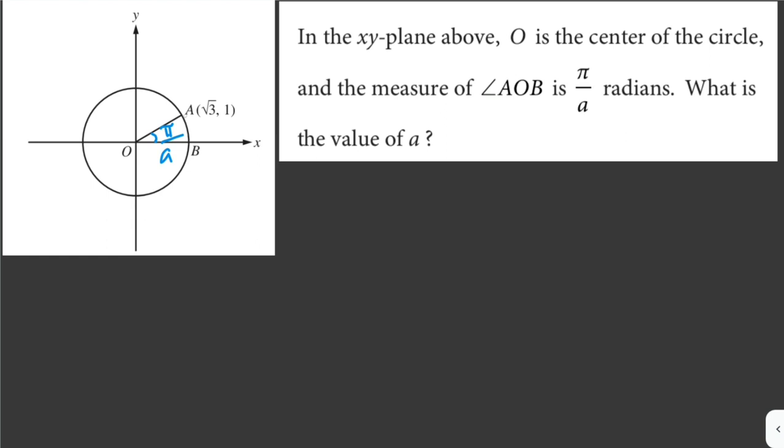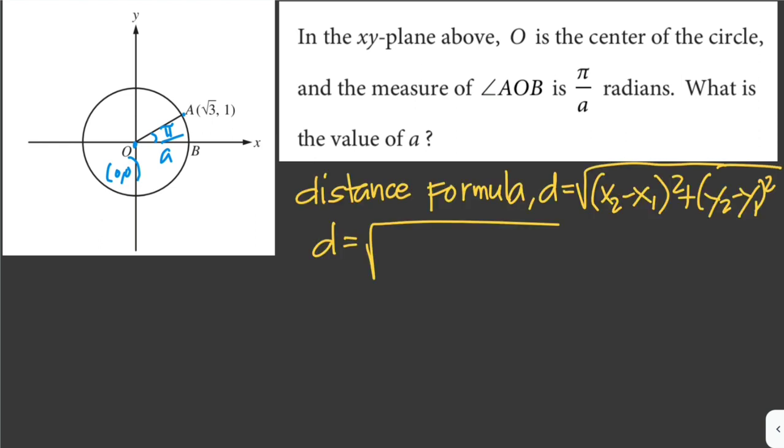We're given here point A, and then point O is (0, 0). So we can use the distance formula to solve for the distance from point O to point A. So that is our distance formula.